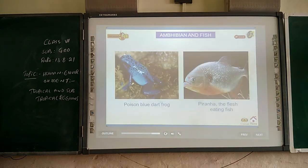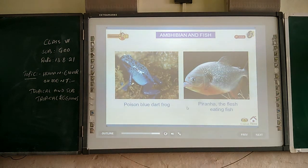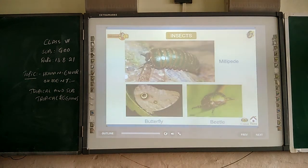Among amphibians and fish, the poison dart frog and piranha — the flesh-eating fish — are found. Among insects, millipedes, butterflies, and beetles are found.